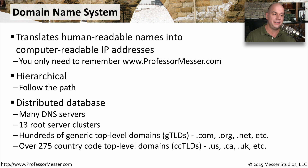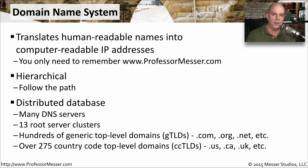There are 13 root server clusters. These 13 root servers are the jumping off point that can help you find any other domain name in the world. There are hundreds of generic top-level domains, GTLDs as we call them. The most familiar, of course, are .com and .org and .net, but there are hundreds and hundreds of others you can choose from.